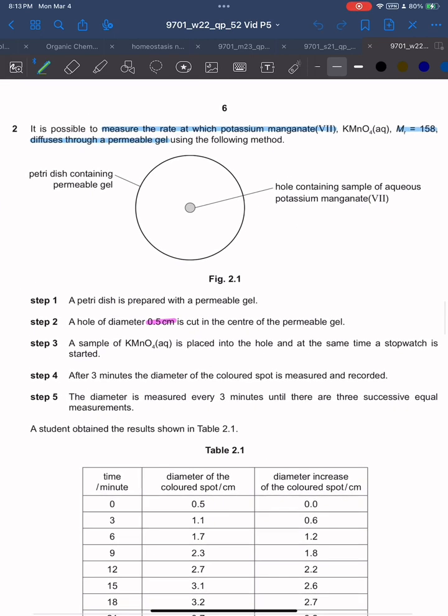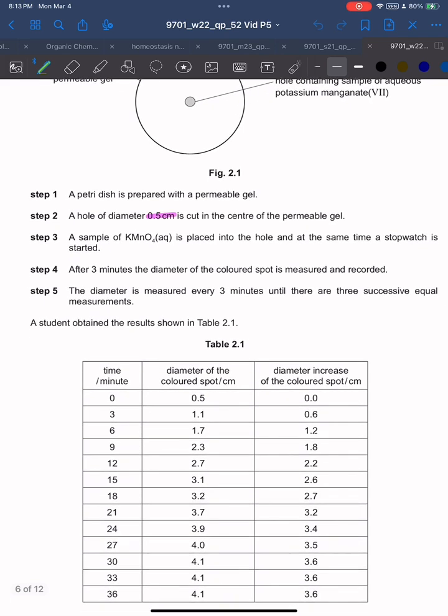It is possible to measure the rate at which potassium manganate KMnO4 diffuses through permeable gel using the following method. Step 1: A petri dish is prepared with permeable gel. Step 2: A hole of diameter 0.5 cm is cut at the center of the gel. Step 3: A sample of KMnO4 is placed into the hole and a stopwatch is started. After 3 minutes, the diameter of the colored spot is measured.